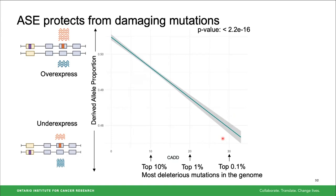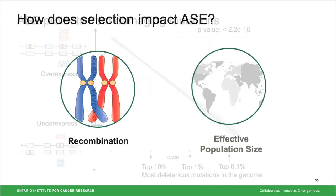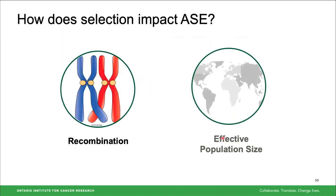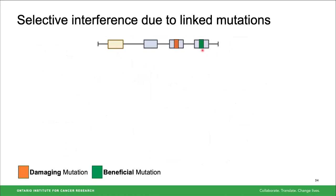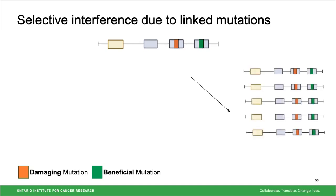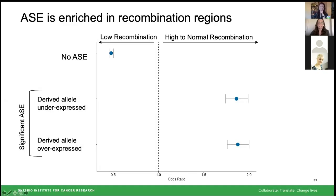This result is important because as I introduce aspects of selection, I want to test whether this action changes. The first aspect is recombination. We know selection acts to increase beneficial mutations and decrease damaging ones, but what happens when both are on the same haplotype and linked? This is known as selective interference. We see that for both bins of significant ASE — derived underexpressed or overexpressed — they are enriched in regions with high to normal recombination, supporting the idea that selection is influencing ASE through recombination.